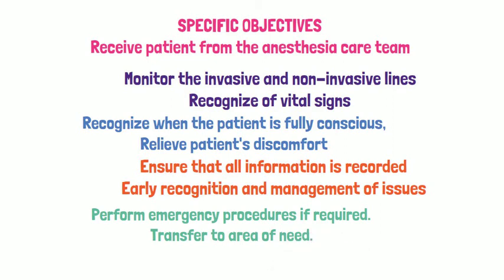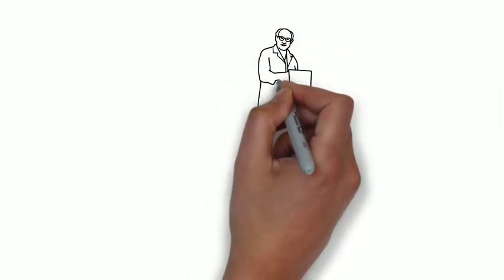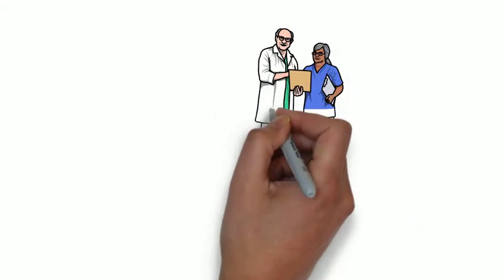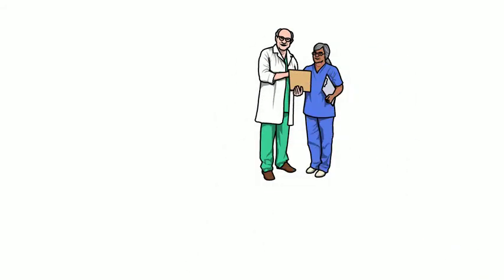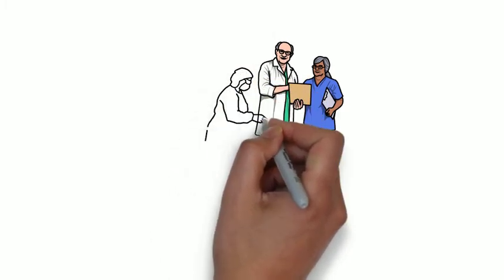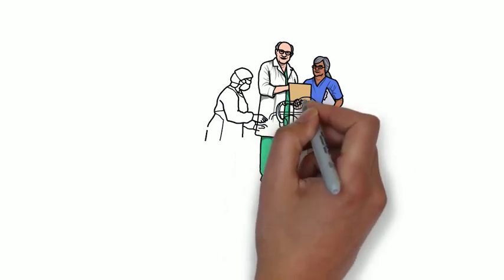Staff must check for swallowing or gagging and monitor the patient's level of consciousness. They must prevent aspiration in case the patient has vomiting, and recognise when and where the patient should be shifted after recovery. An unconscious patient must be closely monitored at all times.